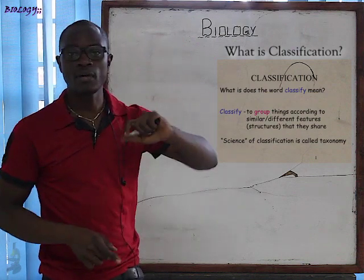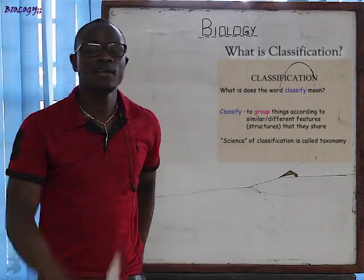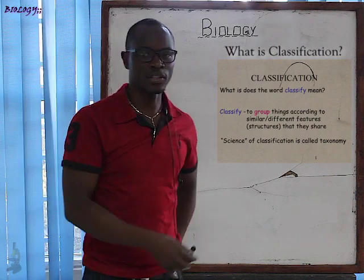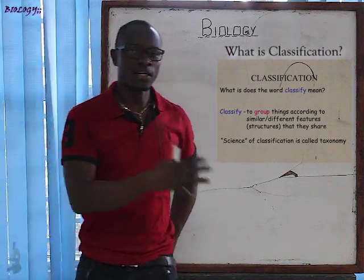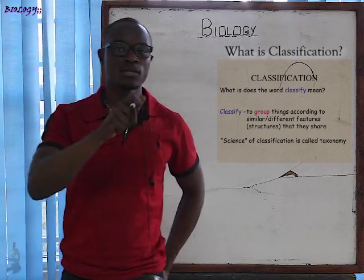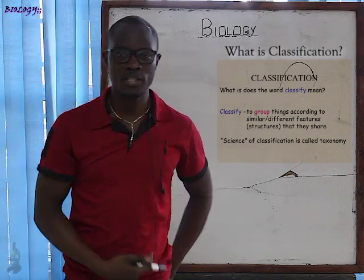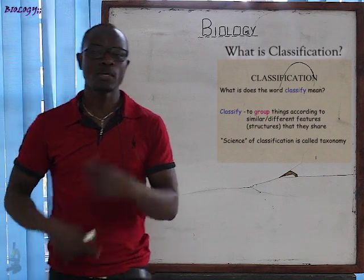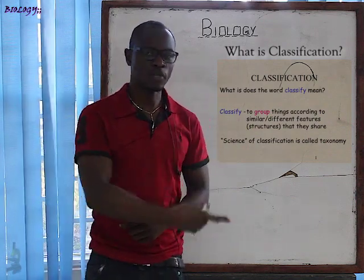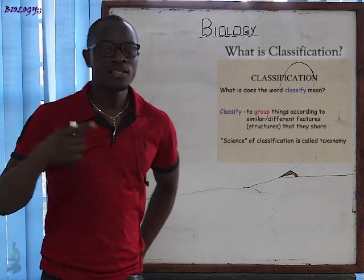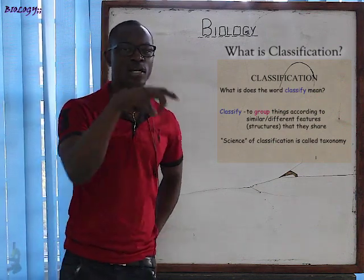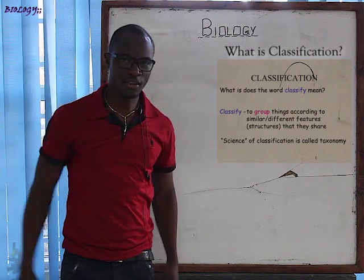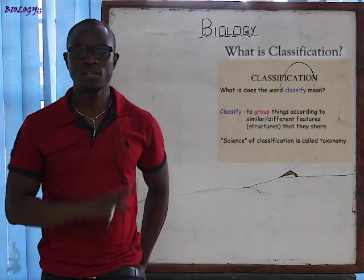If you remember, in Topic 1 we studied taxonomy. Taxonomy is the study of classification. And classification is the study of grouping of organisms and placing them in the correct groups of ancestry or similarity.